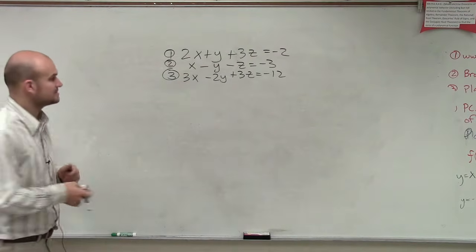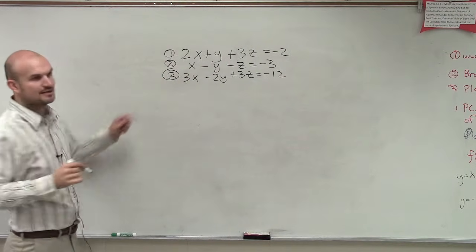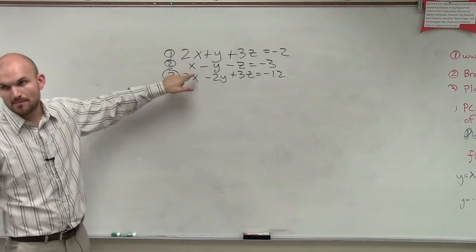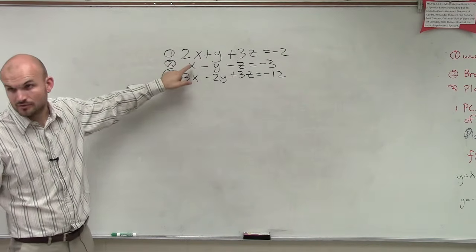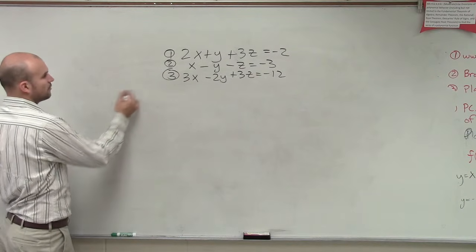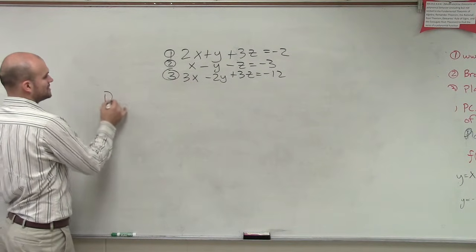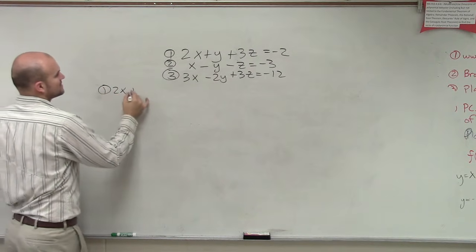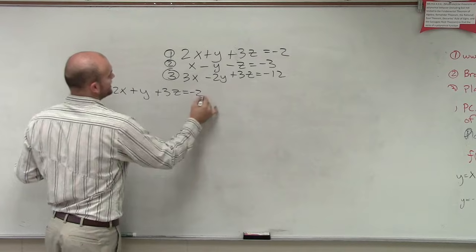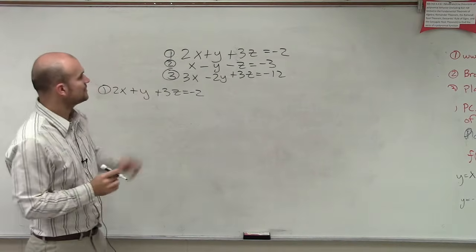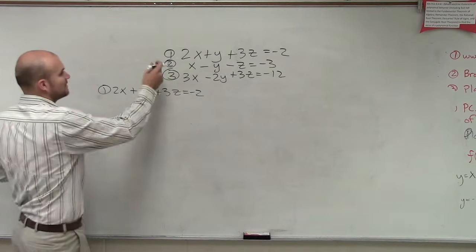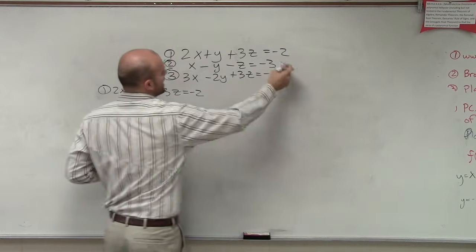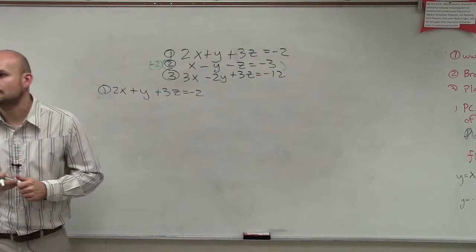So let's take a look, ladies. If I want to eliminate x, that means I can multiply this by a multiplier of negative 2, right? So let's take equation number 1 and number 2. So for equation 1, I have 2x plus y plus 3z equals negative 2. However, I am going to, to eliminate the x between 1 and 2, I'm going to multiply equation 2 by negative 2. All right?